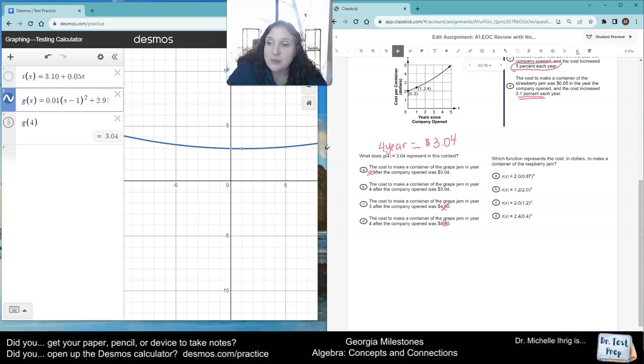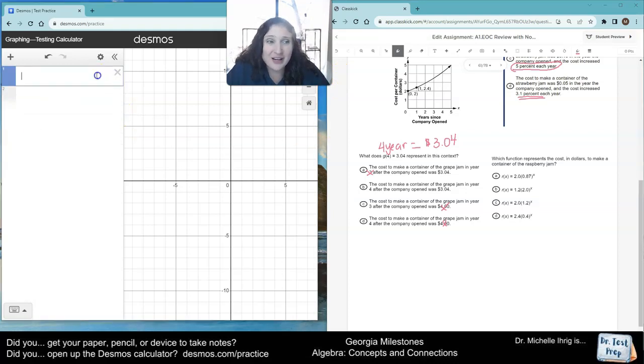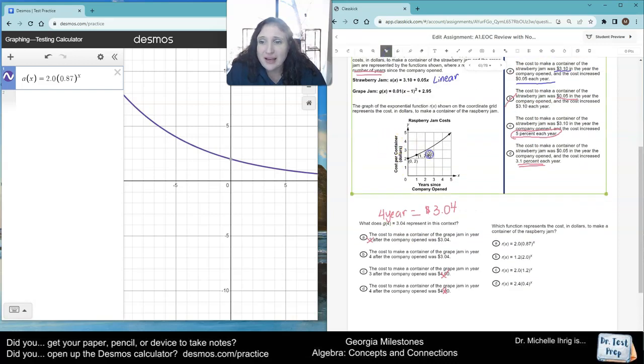This one says, which function represents the cost in dollars to make the Raspberry Jam? Well, we have A, B, C, D as options. So we're going to go to our A of X, B of X process. A of X equals 2.0 times 0.87 to the X. Well, when I look at that, I can clearly see that my graph is going down. And I'm trying to match it to the Raspberry Jam graph, which is going up. So I know it's not letter A.